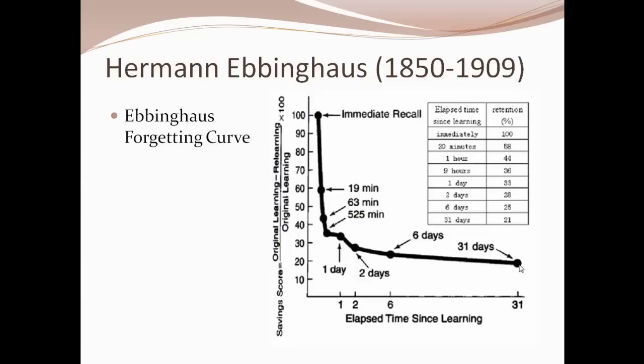He was very controlled and methodical, kept great records, and repeated this series of studies over five years before publishing — multiple lists, multiple times, multiple trials. You can see how he was careful to ensure the data were reliable. That really good methodology, especially for that era, makes this data unusually valuable, which is one of the reasons why it's still reported in introductory psychology textbooks to this day.